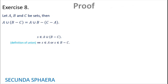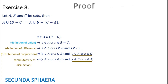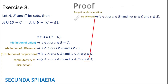Using the definition of union: S is in A or S is in (B without C). Now using the definition of difference: S is in A or (S is in B and S is not in C). Now it is possible to distribute the disjunction over the conjunction: (S is in A or S is in B) and (S is in A or S is not in C). Now let's commute the last two terms of the disjunction, so instead of (S in A or S not in C), we have (S is not in C or S is in A).